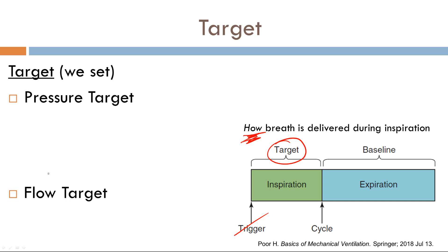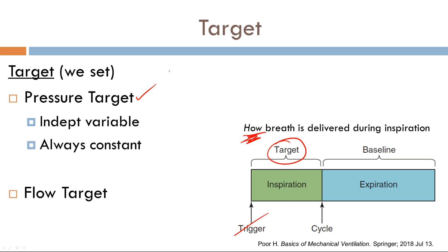Let's start with the pressure target. Here, pressure is your independent variable — it is constant, it is something that we set. Every time we set it, the amplitude is exactly the same. For example, I can set a pressure control of 20 centimeters of water and every single breath the pressure will be 20. Here pressure is your independent variable; however, flow will be your dependent variable and will vary with every single breath.